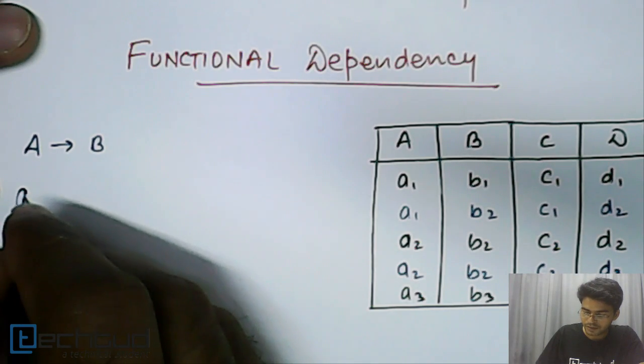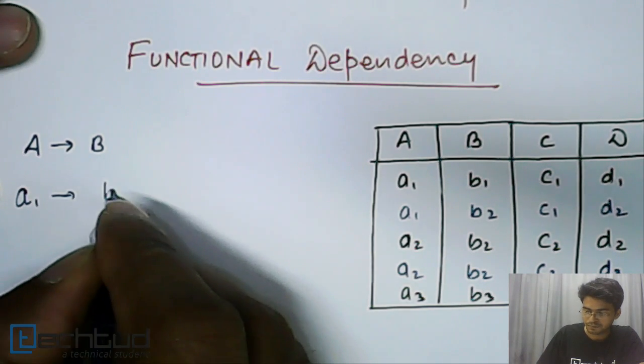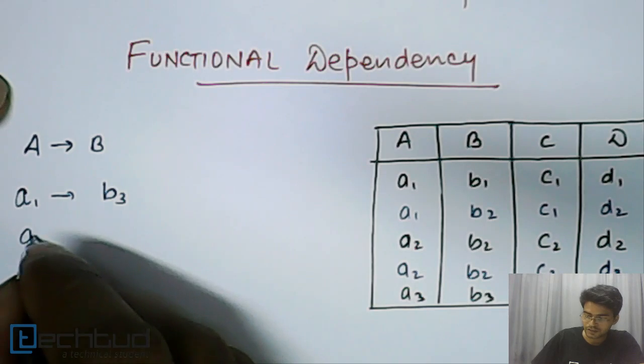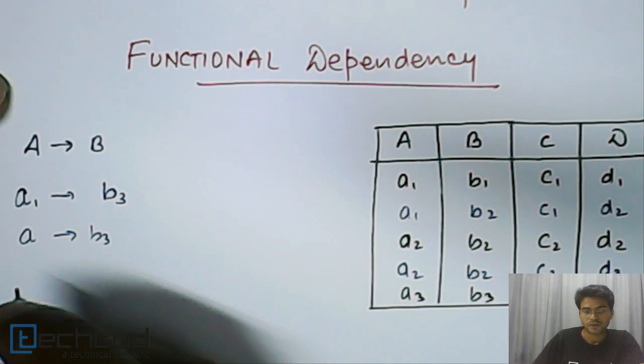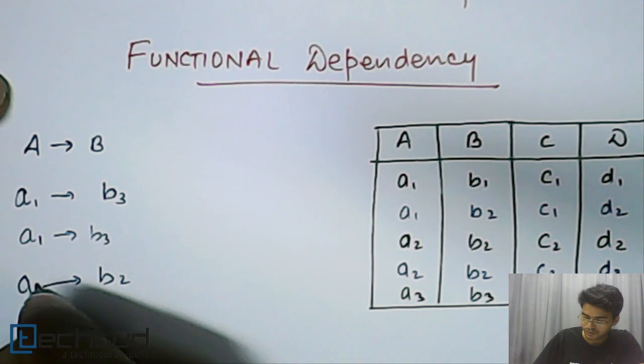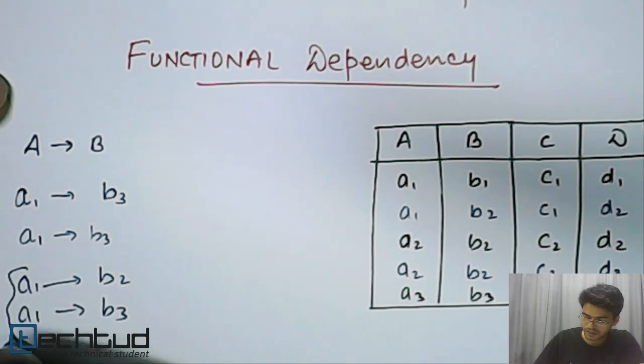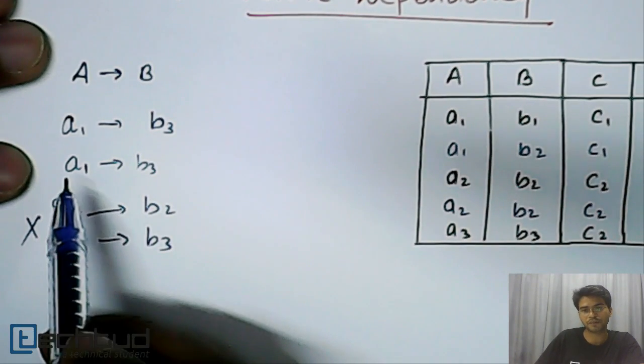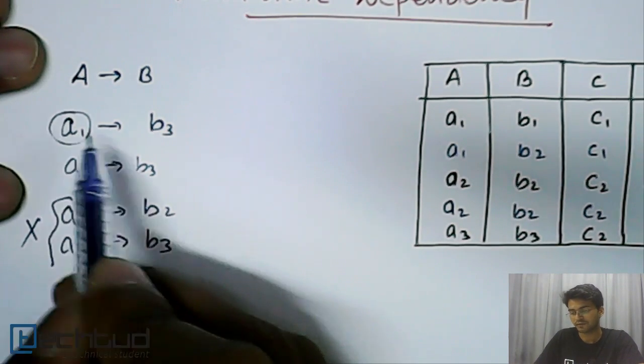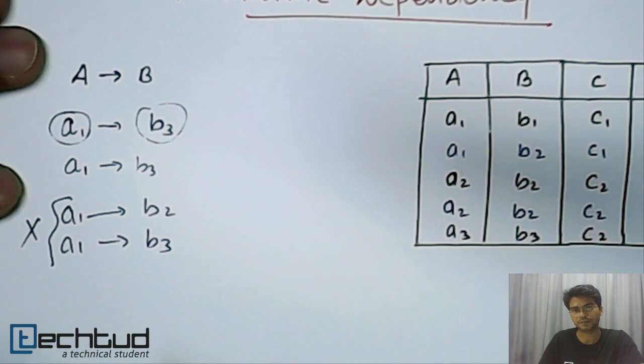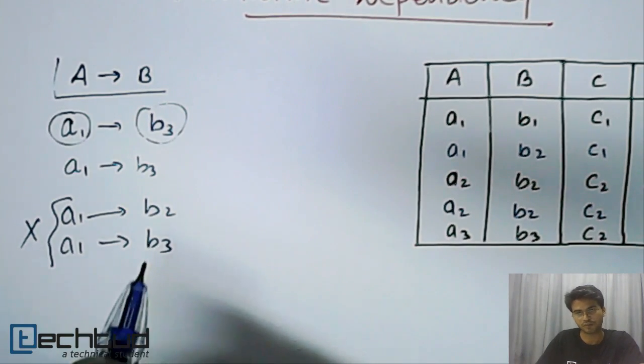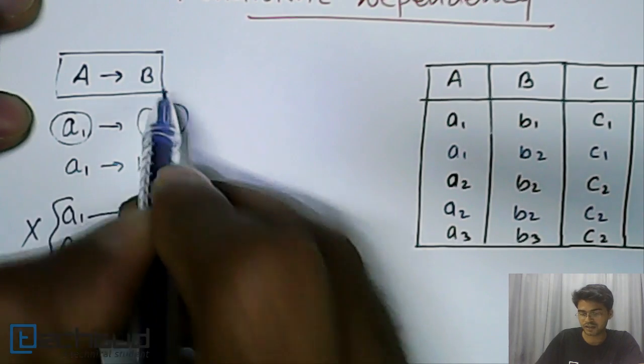Let's say if we have a₁ which is giving us b₃, then in the entire table a₁ will always result to b₃. There will not be a case when a₁ results in b₂ and a₁ also results in b₃. This case will not be there. We will always have a unique value corresponding to a particular element. Like a₁ will always derive to b₃. So if these conditions are satisfied throughout the table, then we say A can functionally determine B.